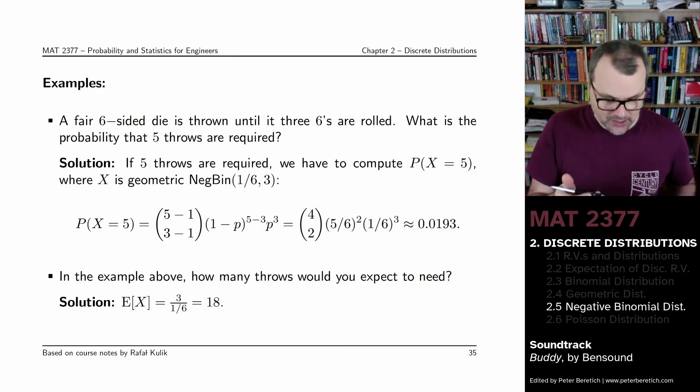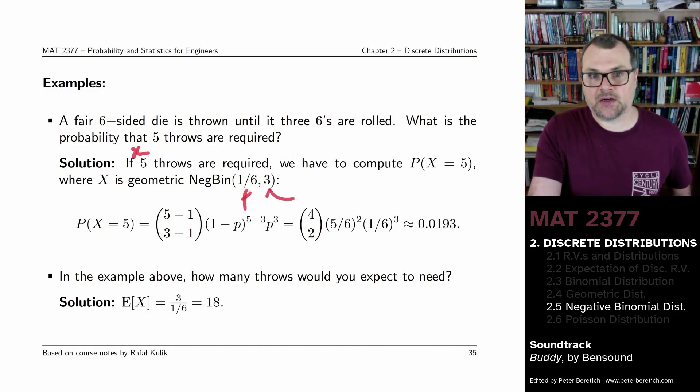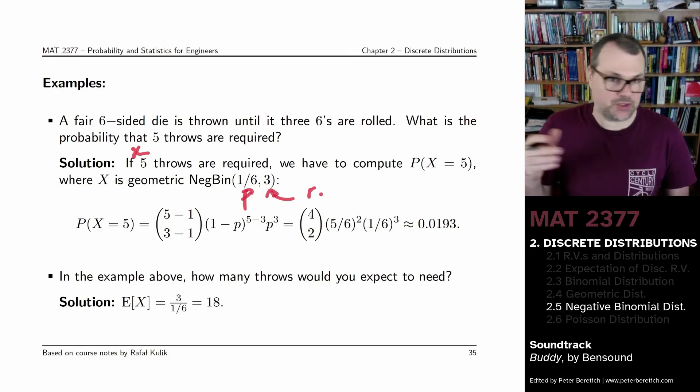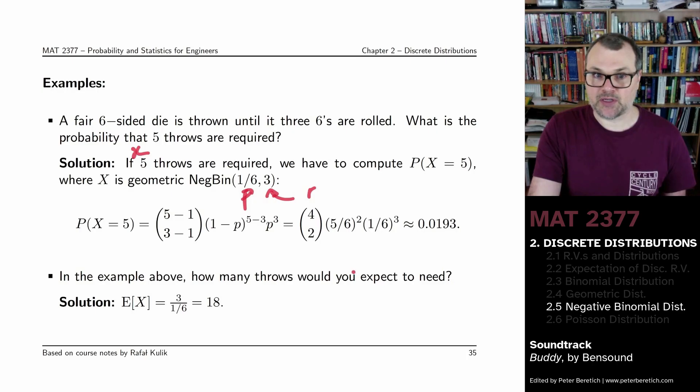Well, in this case, X is equal to 5, P is still equal to 1 over 6, and R is equal to 3. And you just need to substitute these values into the probability mass function.